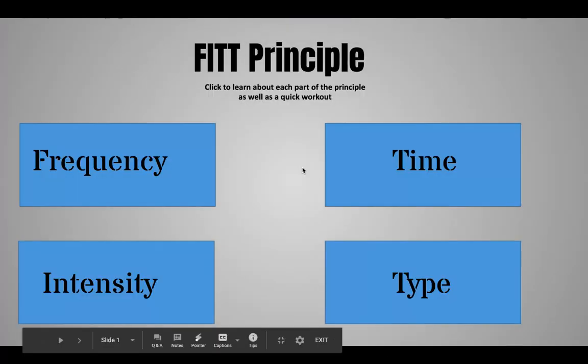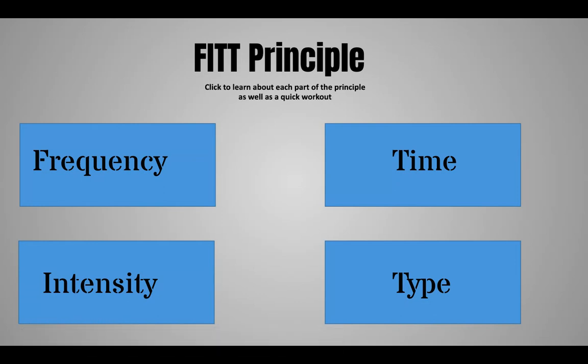Today I am going to be going over the FITT principle in regards to physical education. The FITT principle has four letters: F-I-T-T, and it's an abbreviation. Each letter stands for something. As you can see on this first screen, the F stands for frequency, the I stands for intensity, the T stands for time, and the other T stands for type. We will describe what each of these mean in further detail.